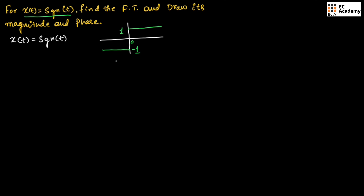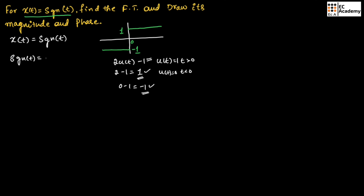This signum function can be represented as 2u(t) minus 1. We know u(t) equals 1 for t greater than 0, so we get 2 times 1 minus 1, which equals 1. When t is less than 0, u(t) equals 0, so it becomes 0 minus 1, which is minus 1. So we are getting amplitudes of 1 and minus 1 from this equation — that is why we represent the signum function as 2u(t) minus 1.